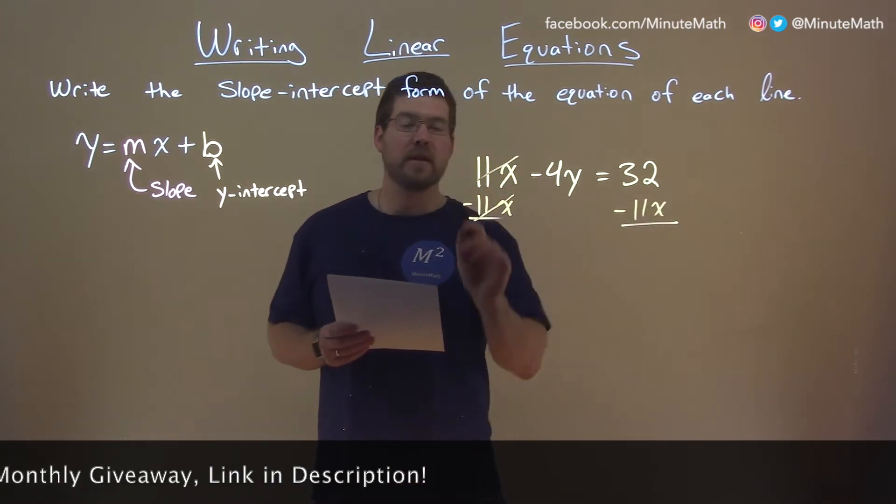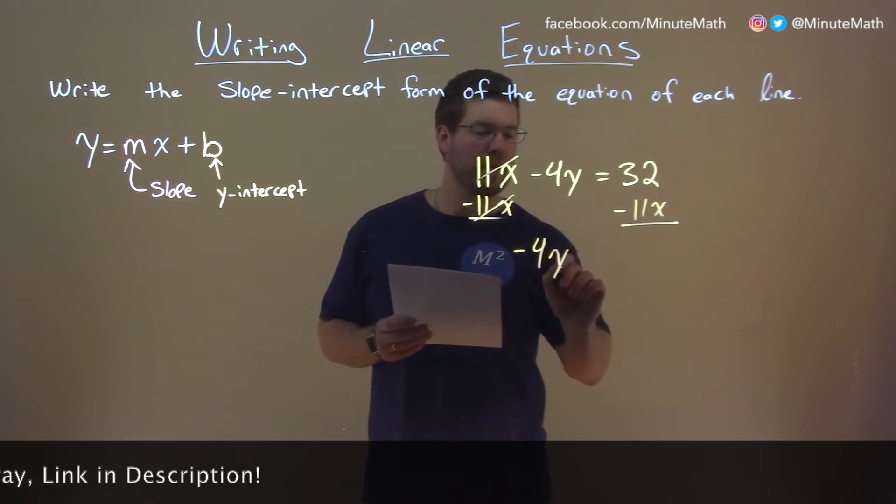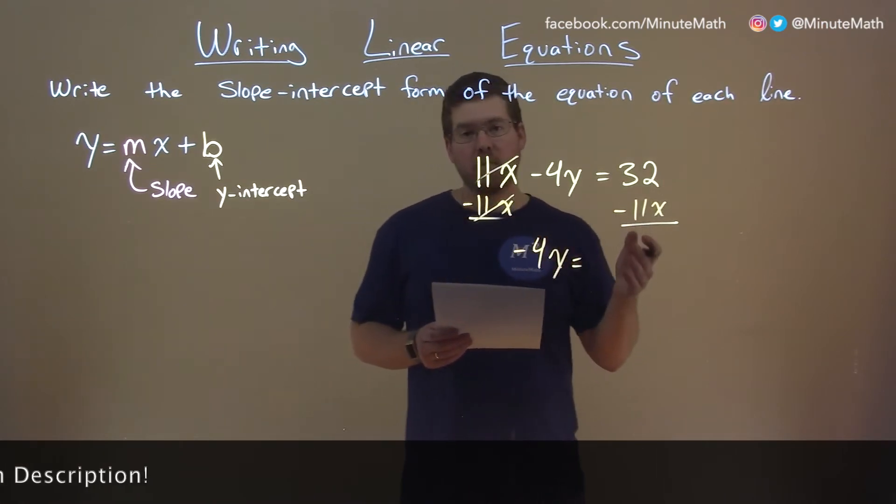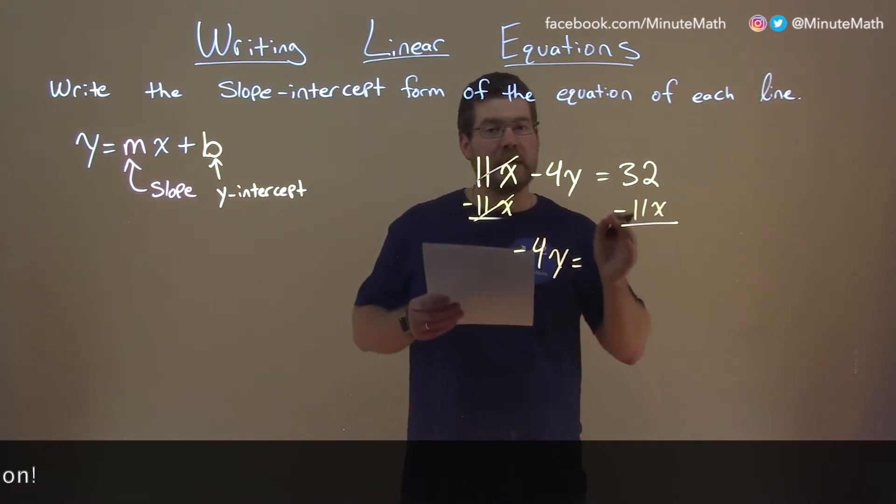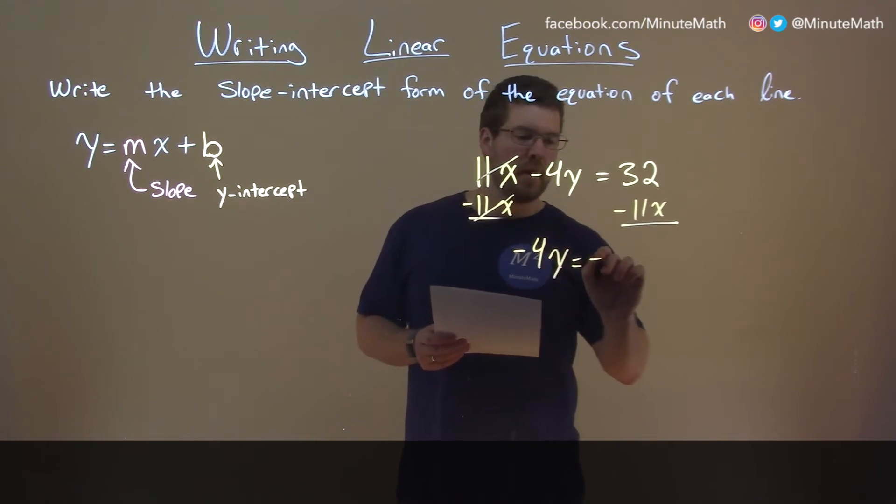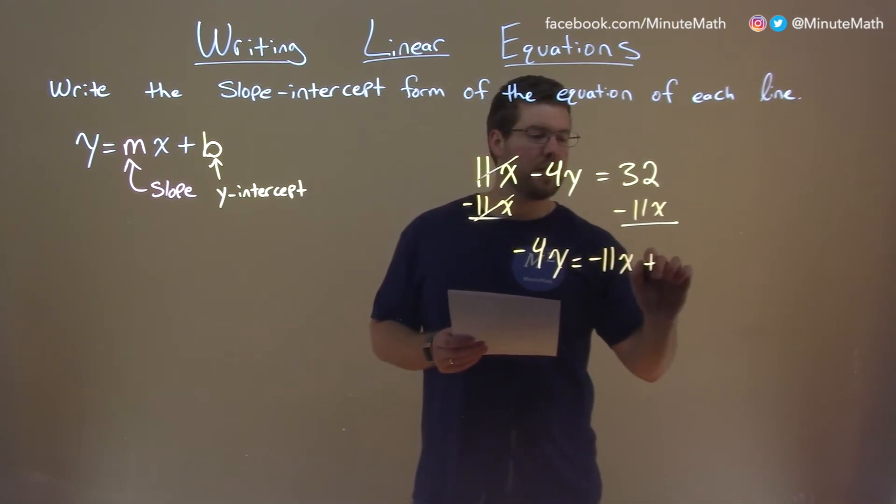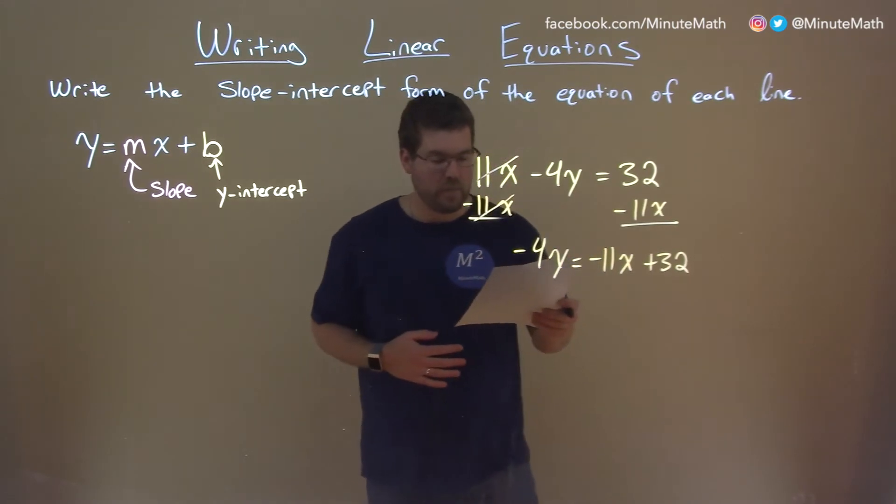That cancels the 11x, giving me a minus 4y here on the left, and on the right, they are not like terms, we cannot combine them. Minus 11x here, plus 32, and now we need to go from here.